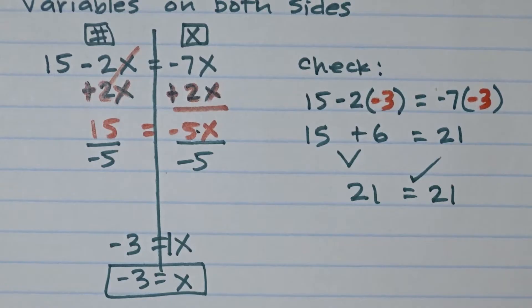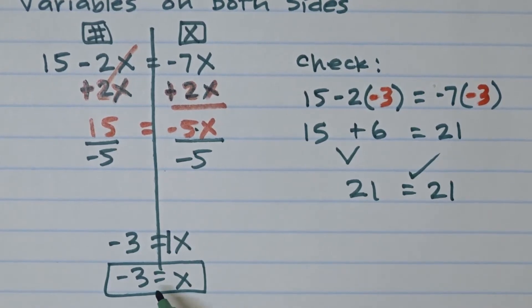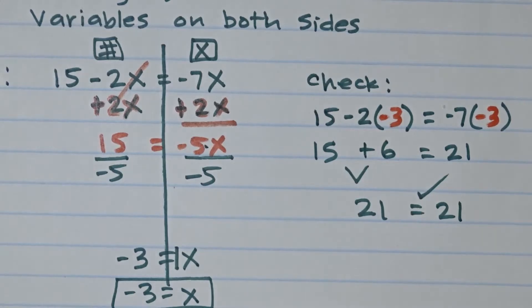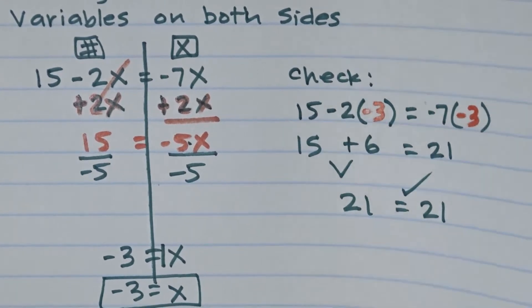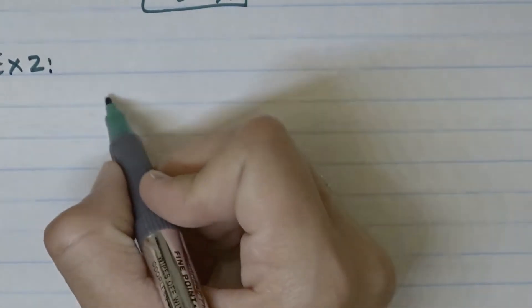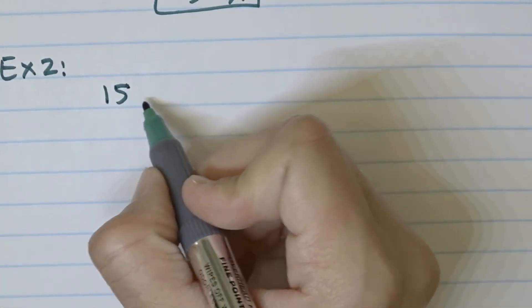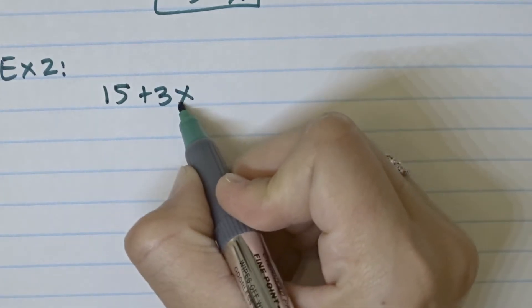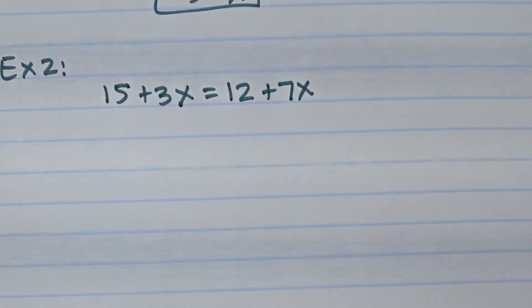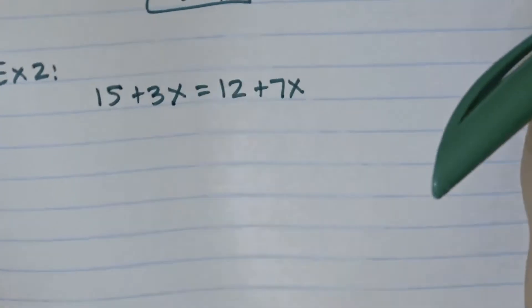When checking your answer, you replace x with the solution and verify that the left and right sides are equal. Now let's do the next example: 15 plus 3x equals 12 plus 7x. This one has four terms.